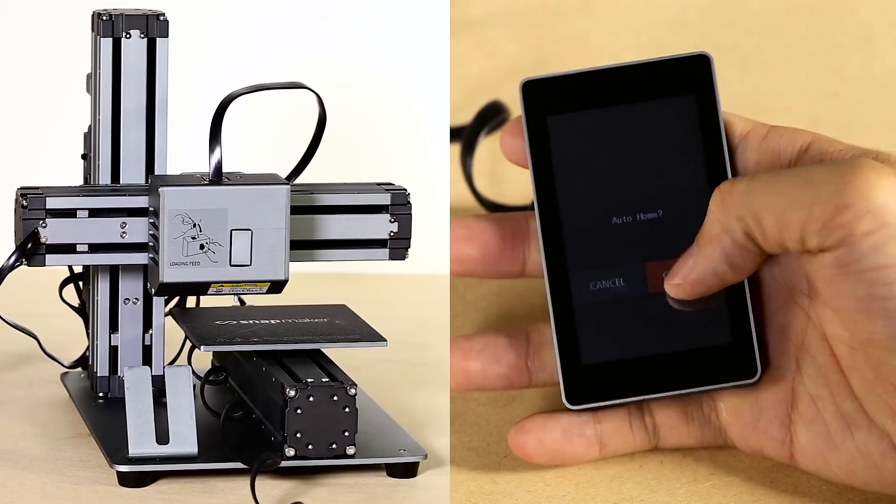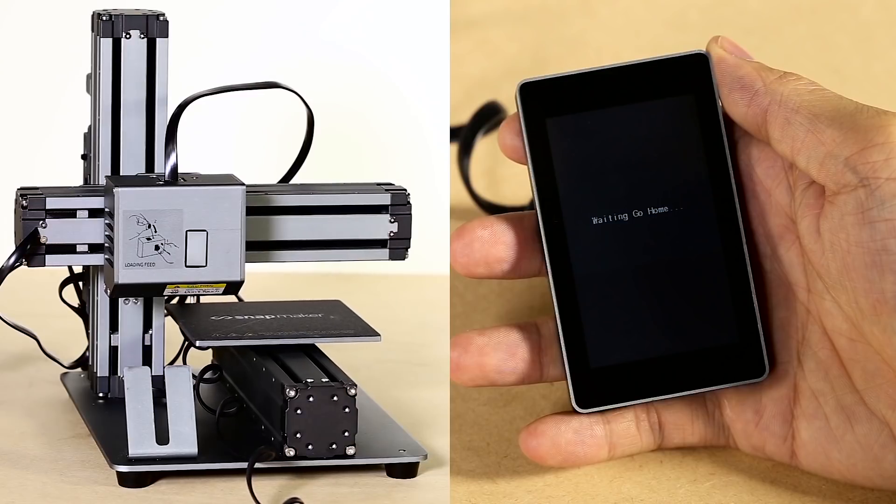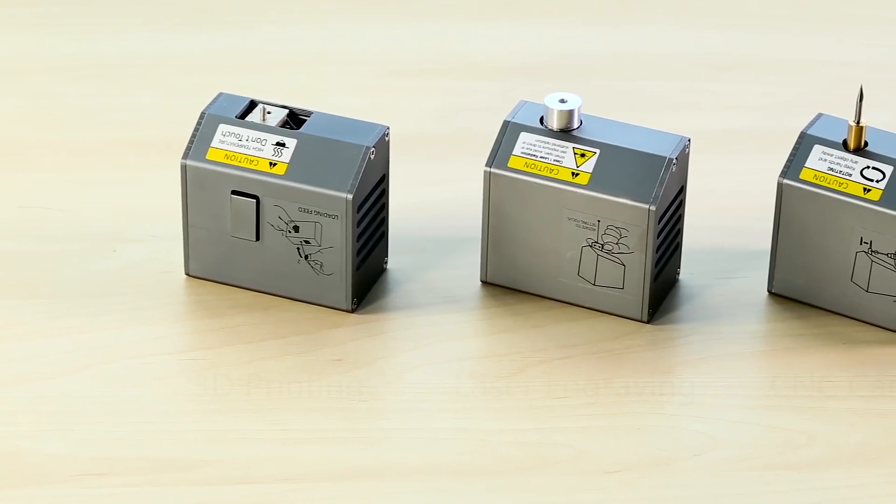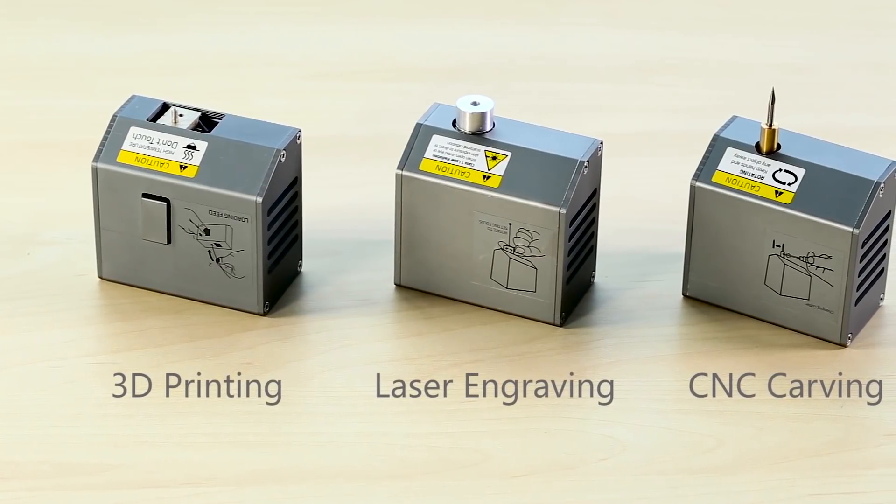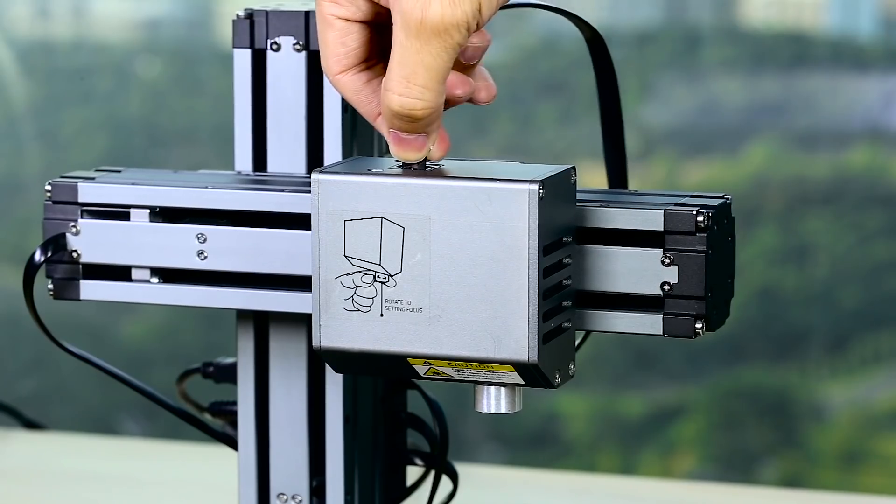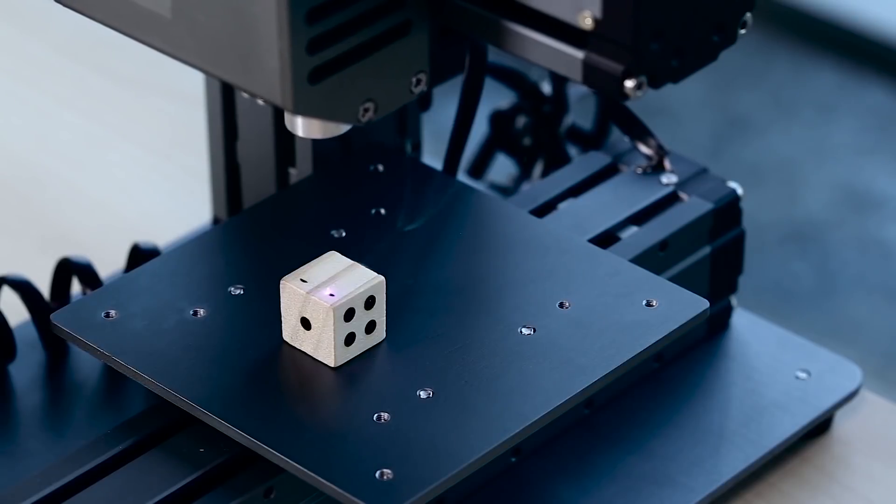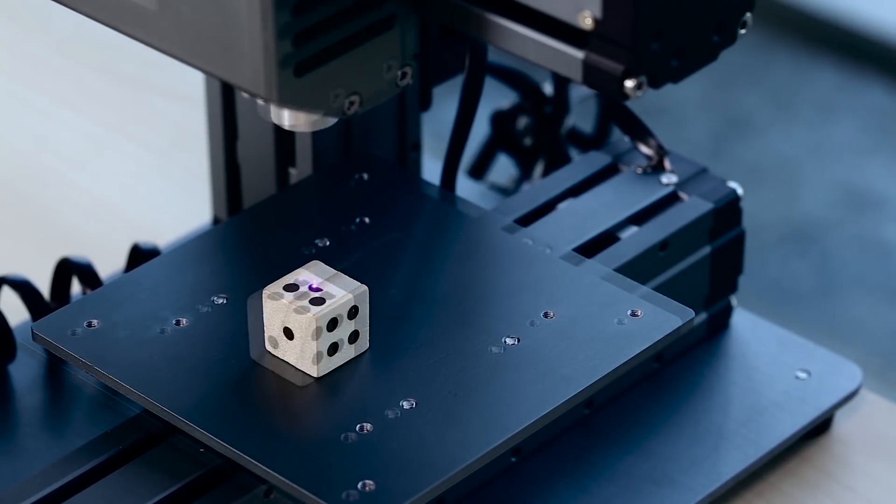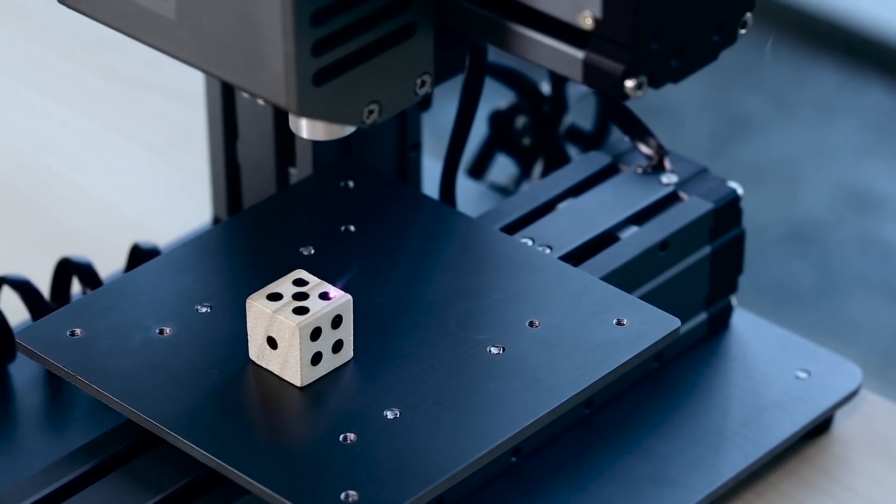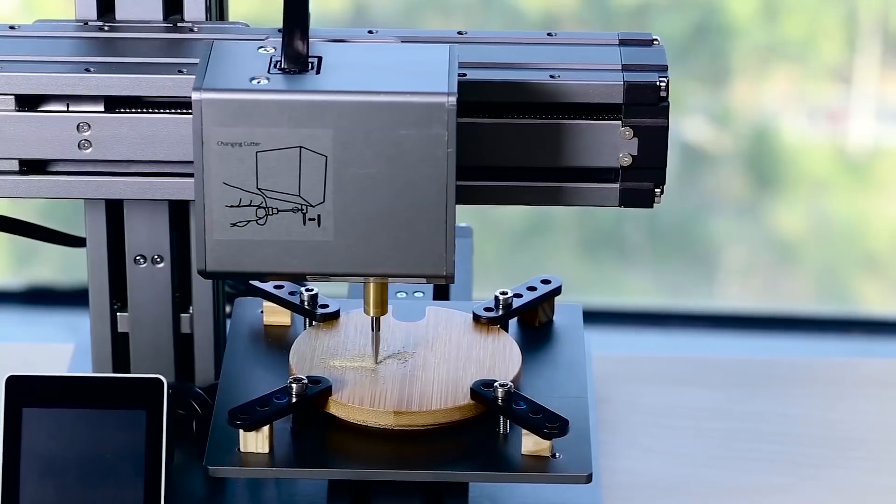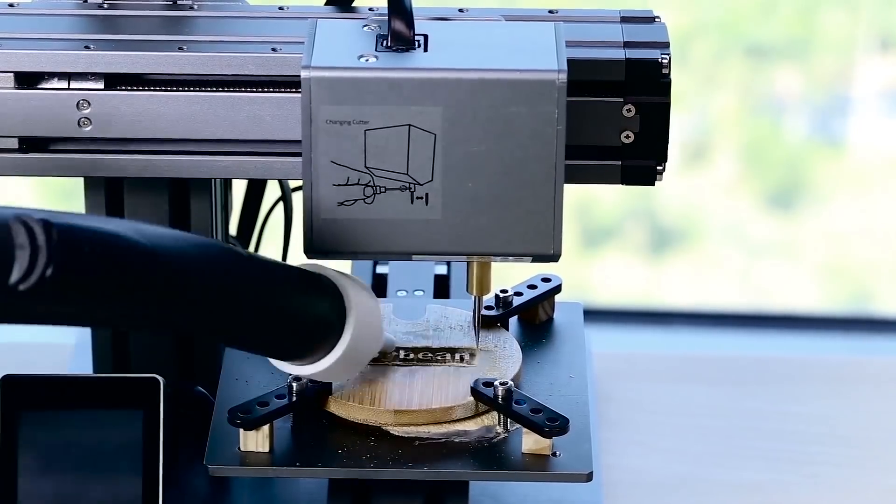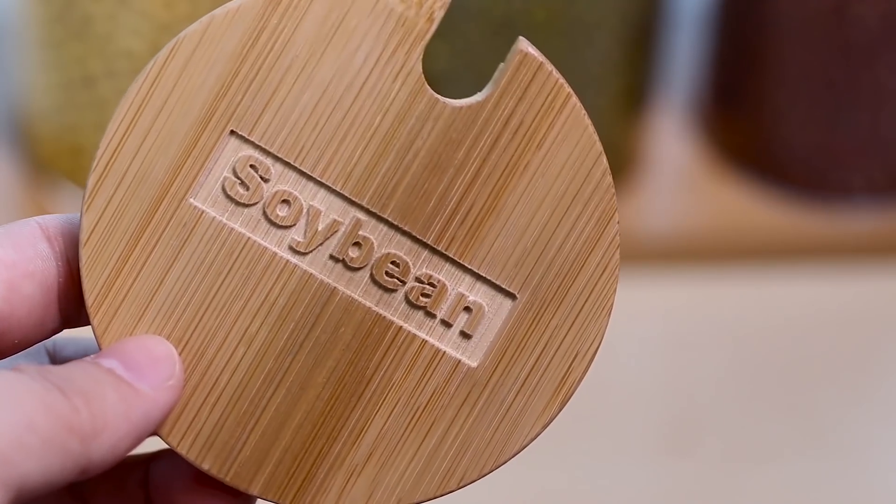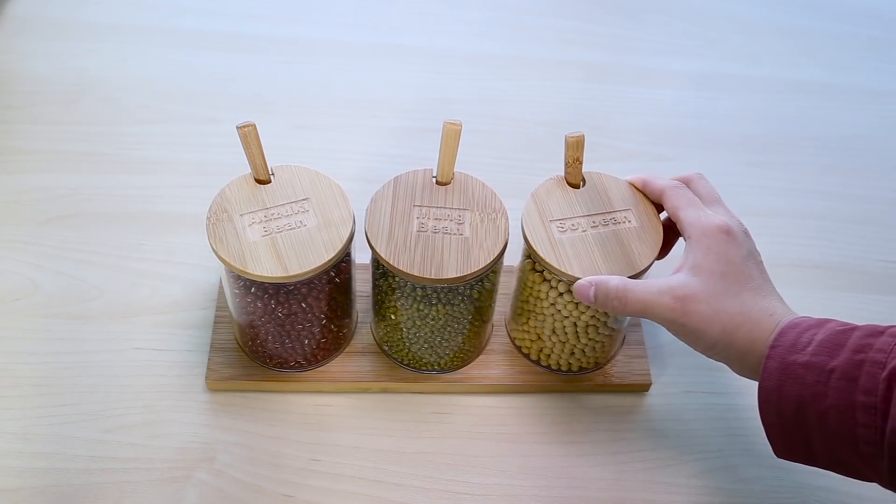The Snapmaker also features expanded options of laser engraving and CNC carving with interchangeable heads. Snapmaker can be easily transformed into a laser engraver that sparks your creativity and CNC carving machine that lets your imaginations run wild. Snapmaker is versatile, inspiring you to create in more ways.